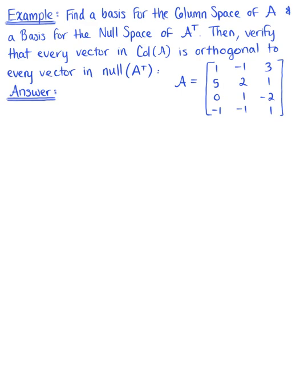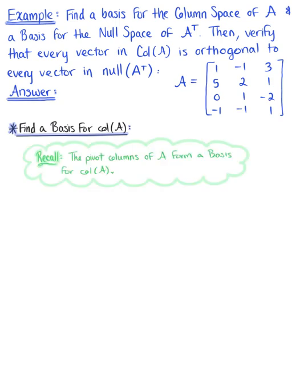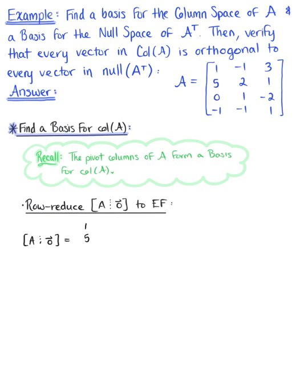The first thing we want to do is find a basis for the column space of matrix A. We can recall that the pivot columns of matrix A form a basis for the column space. So in order to find the basis for the column space, we need to row reduce matrix A augmented with the zero vector to echelon form.